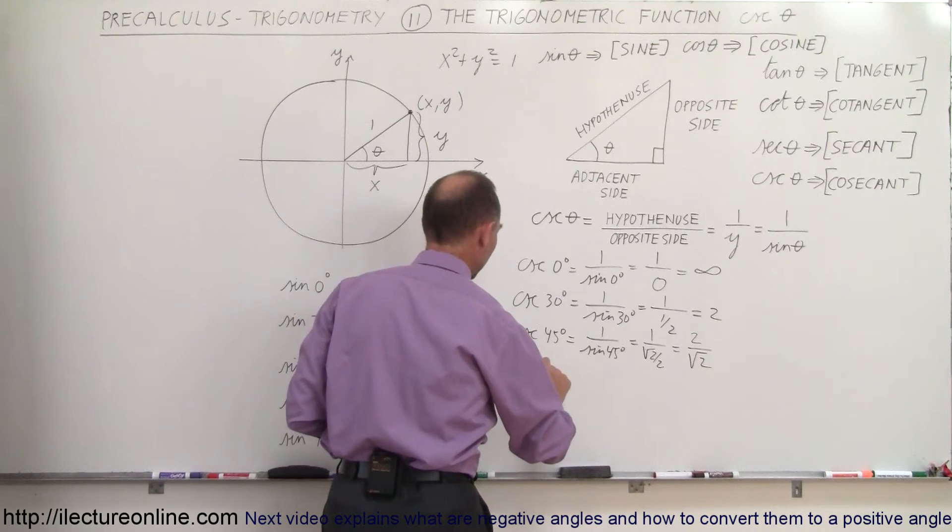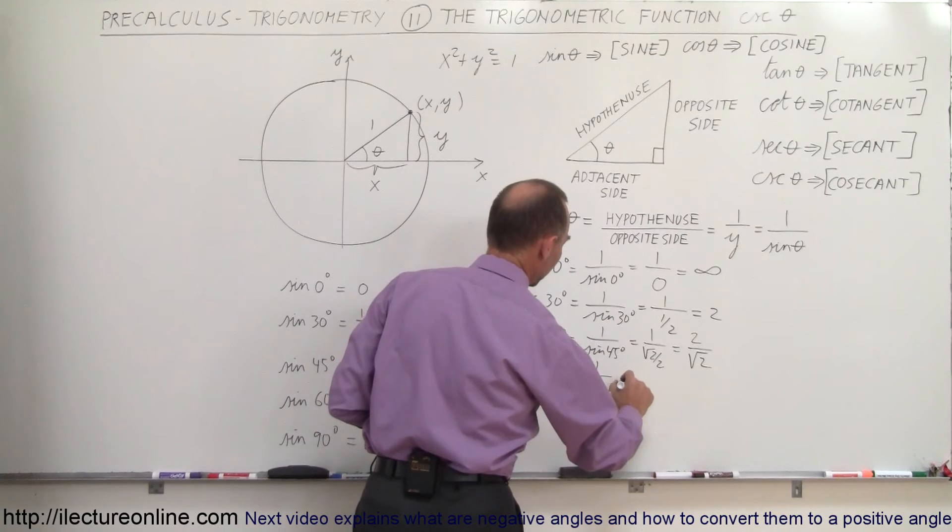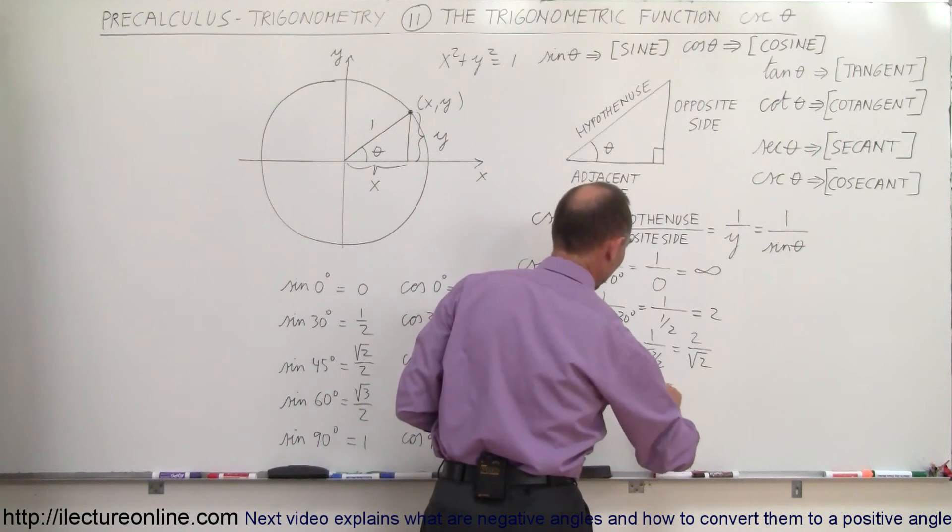And the cosecant of sixty degrees is equal to one over the sine of sixty degrees, which is equal to one divided by the square root of three.